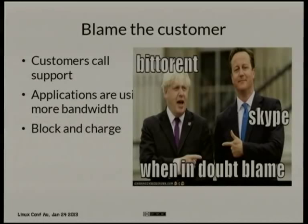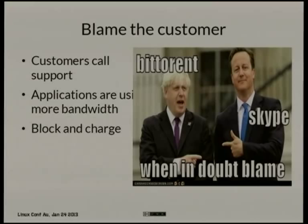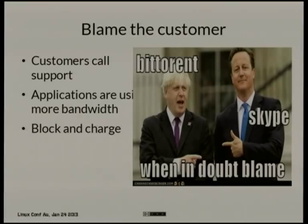ISPs also responded. In the States there was a period where every ISP was talking about limiting BitTorrent — net neutrality blew up. Jim contacted people at Comcast and they said they were getting customer support calls because the internet was too slow. They were finger-pointing back at customers, saying what you're doing is making your internet slow — restricting applications was their way of solving the problem.